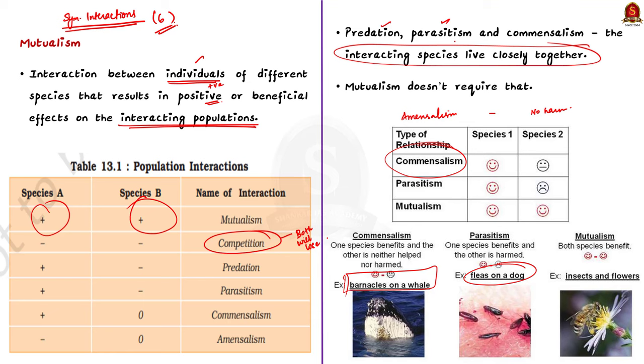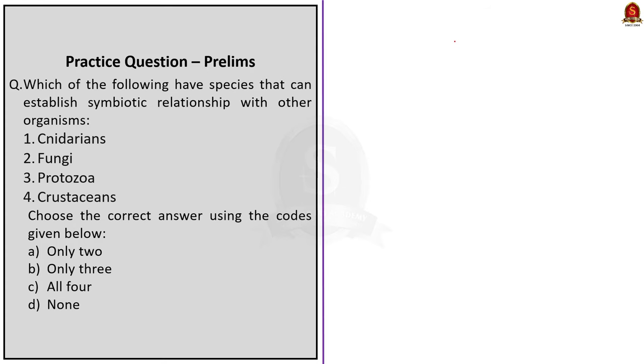In this discussion we saw various examples of symbiotic relationships between various organisms. With these learned points, let us conclude this and take up the next news article for our analysis.